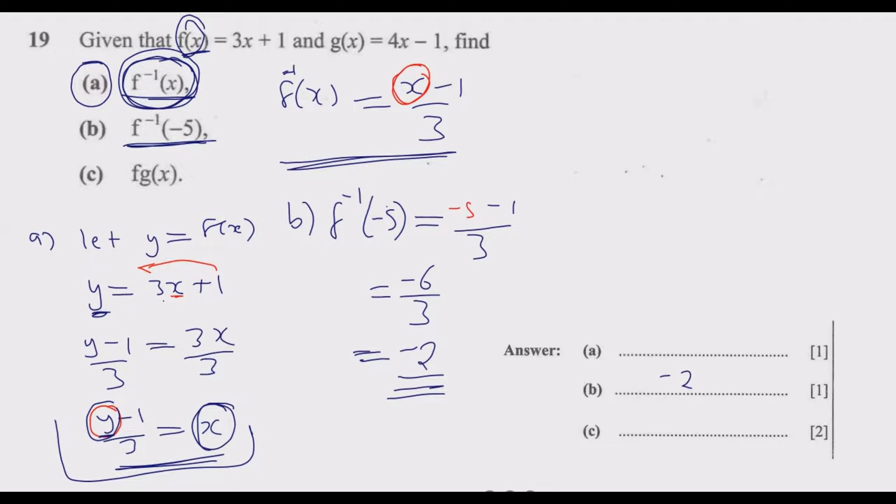Then we move to part c. For c, we are finding the function f(x) where we substitute g(x) wherever there is x. So in f(x), which is 3x + 1, to find f(g(x)), we substitute g(x) for x.